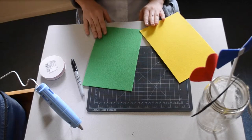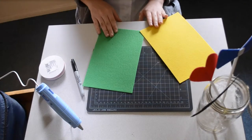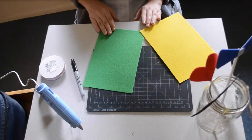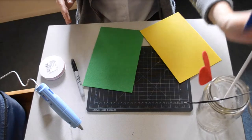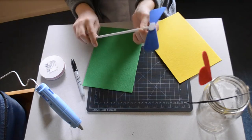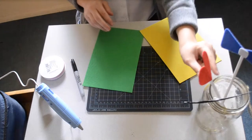Okay, so there are so many different kinds of photo booth props that you can make, but today I'm going to show you specifically how to make a bow tie. So this is what we're going to be making right here. And here are a few more examples of other props.